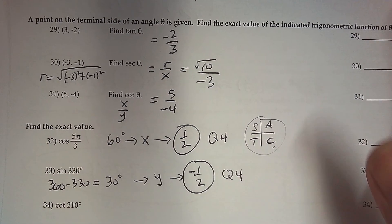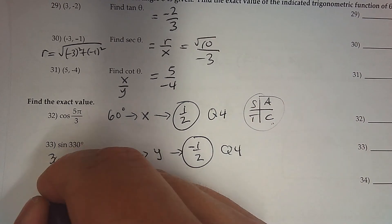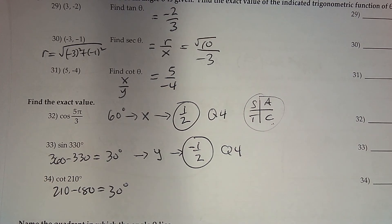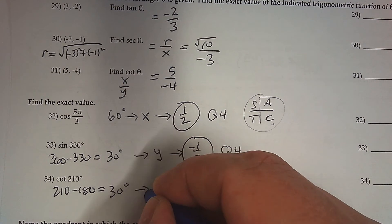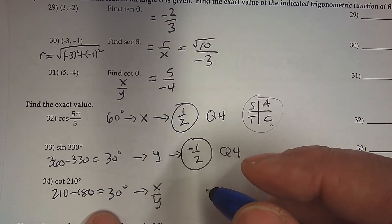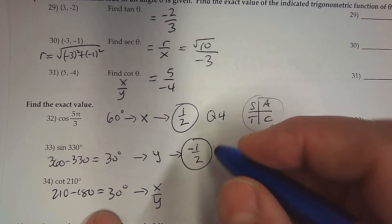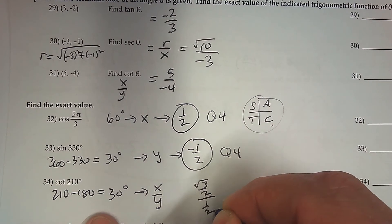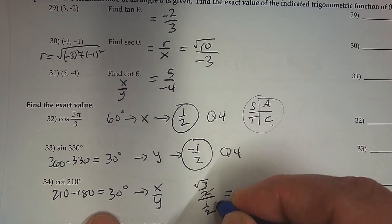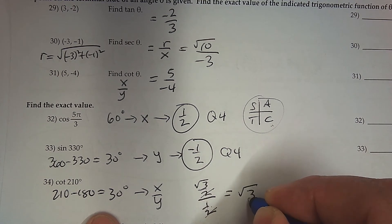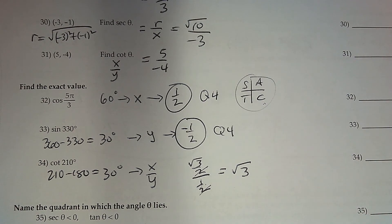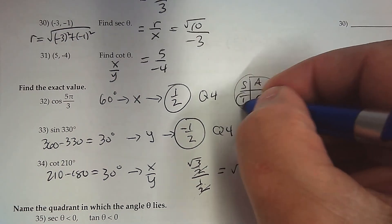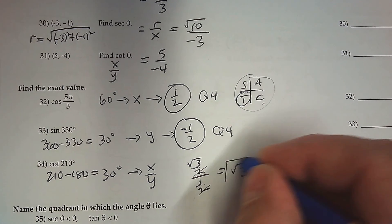For cotangent at 210 degrees: the reference angle is 210 minus 180, which is 30 degrees. Cotangent is x over y. At 30 degrees, the x-coordinate is root 3 over 2 and the y-coordinate is 1 half. When I divide them, the 2s cancel and you get root 3 over 1, or just root 3. We're in quadrant 3, where tangent and cotangent are positive. So the answer is positive root 3.